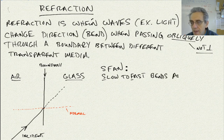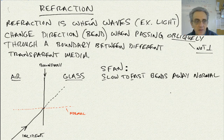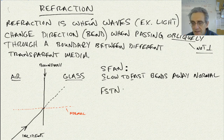SFAN stands for: slow to fast bends away from the normal. And the other one is FSTN.